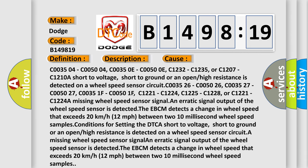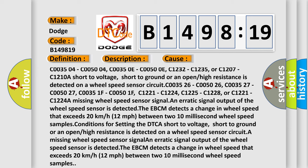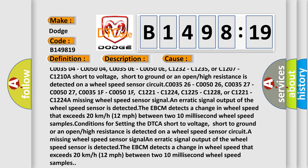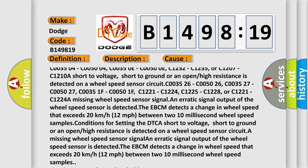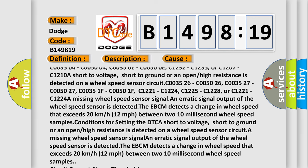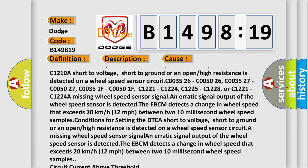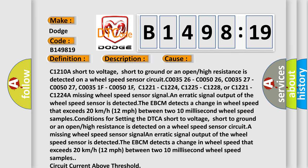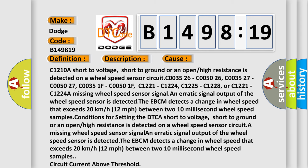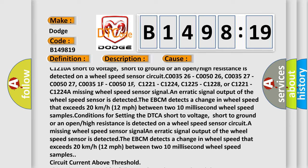C003504, C005004, C00350E, C00500E, C1232, C1235, or C1207, C1210A. A short to voltage, short to ground, or an open or high resistance is detected on a wheel speed sensor circuit.